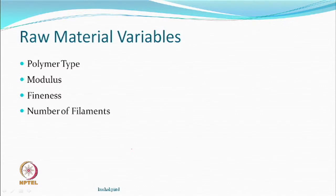Finer individual filaments give better texturing results. Related to fineness is the number of filaments: for the same total linear density, if the number of filaments is greater, all of them have a probability of getting entangled and forming loops, increasing bulk. Feeding more than one yarn together increases the number of filaments, and if the final denier is acceptable, this gives a better textured yarn. The process depends on making loops and forming entanglements as effectively as possible.